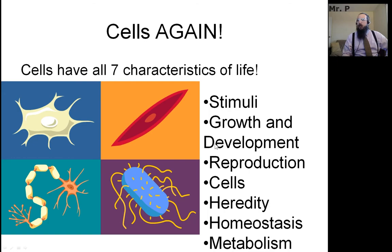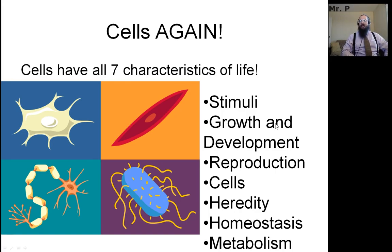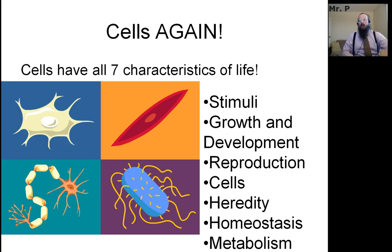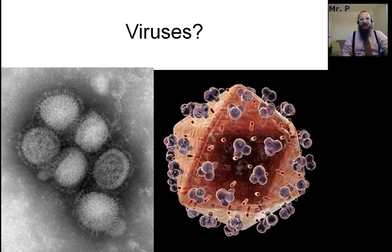Those are the seven characteristics of life. Remember: Sam grows rapidly carrying happy hairy monkeys — for stimuli, growth and development, reproduction, cells, heredity, homeostasis, and metabolism. You have to have all seven to be considered a living organism.